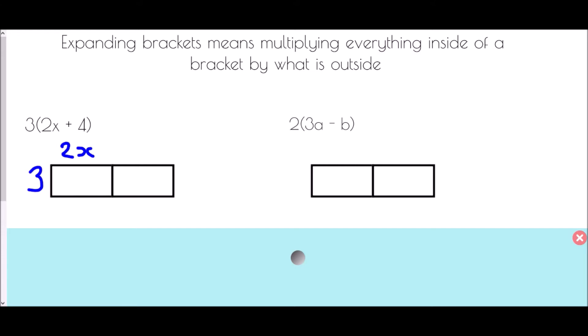I place 2x at the top and +4, then multiply: 3 times 2x gives 6x, and 3 times positive 4 gives 12. So the solution is 6x + 12.